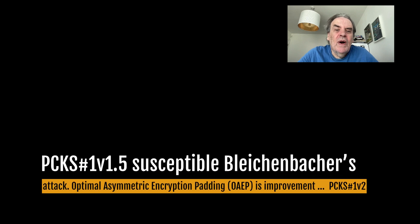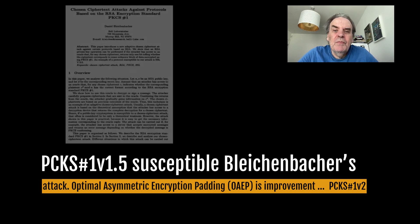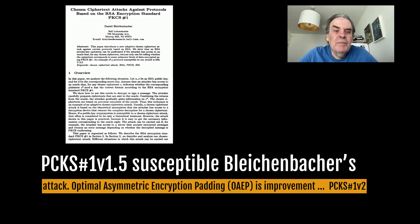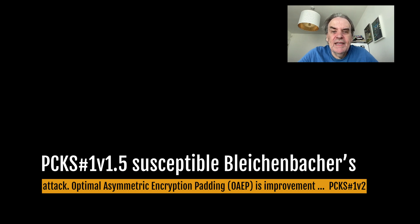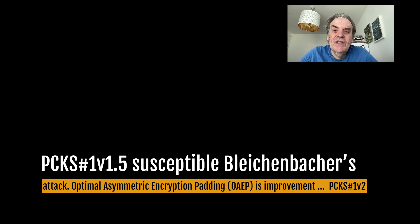RSA requires padding in its security. A popular method has been PKCS #1 v1.5, but this is not provably secure and is susceptible to the Bleichenbacher attack. An improved method is Optimal Asymmetric Encryption Padding or OAEP, defined by Bellare and Rogaway and standardized in PKCS #1 version 2.